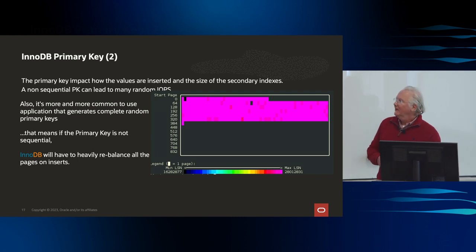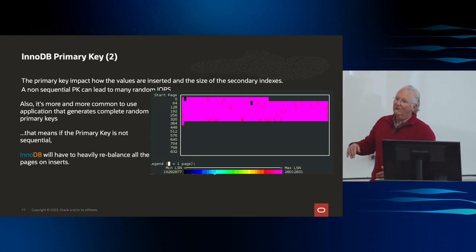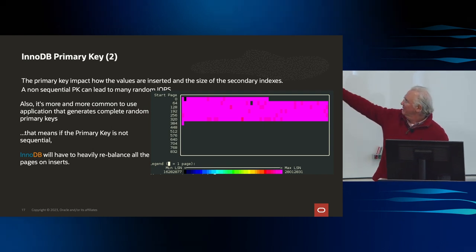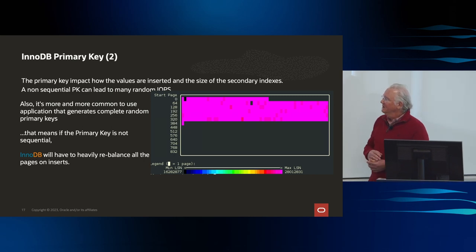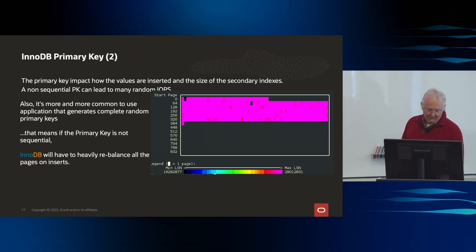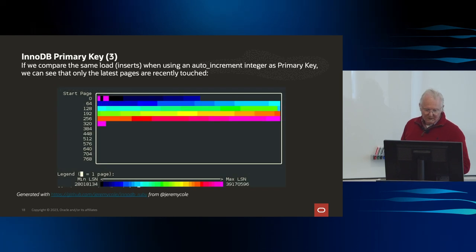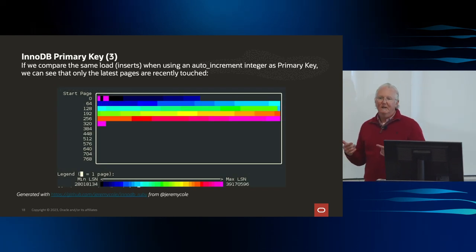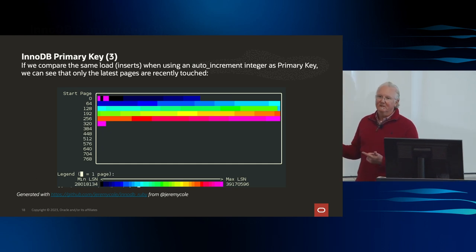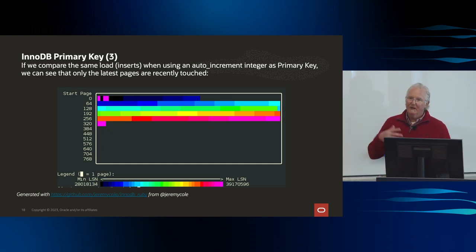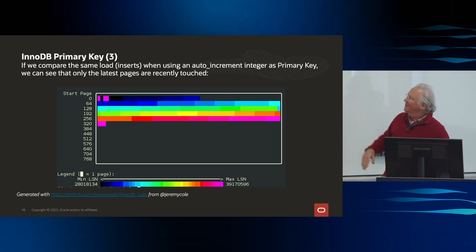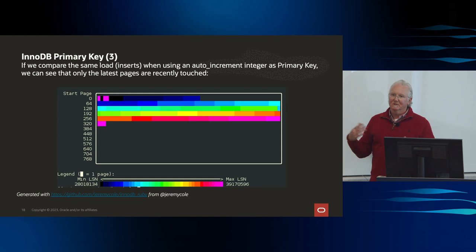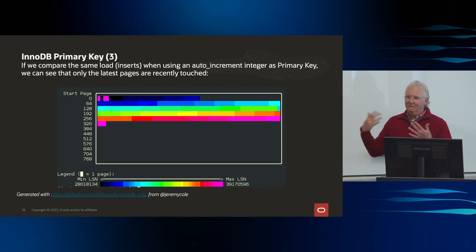If we have a non-sequential primary key, the problem is that you've got to reorder your tree. When you reorder your tree, all this pink activity is bad. We don't really want to do that. What we want is a monotonically increasing positive integer. When we have that and we're adding new rows with auto-incremented values, we're not going to be rebalancing things so much — so a lot less pink, meaning less pages are changed.